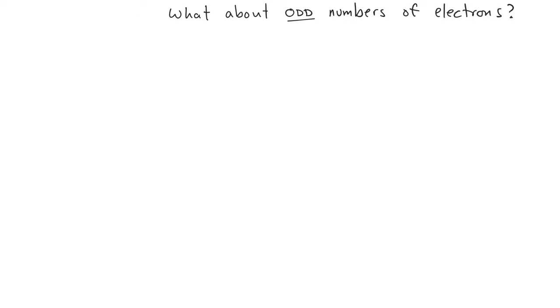In all the molecules we've seen so far, we've had an even number of electrons. We've had 8, we've had 12, we've had 32, 24. What about molecules that have an odd number of electrons?